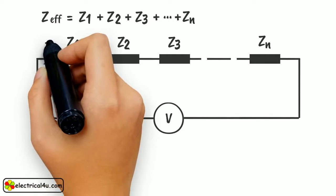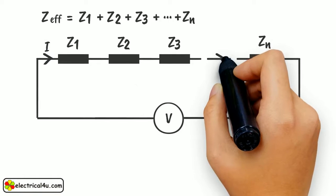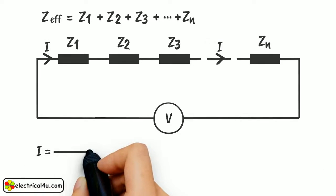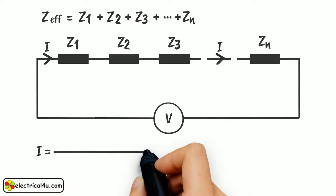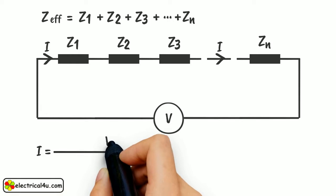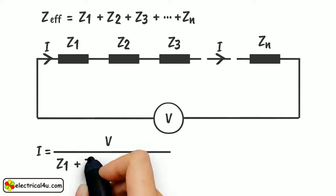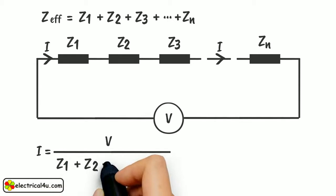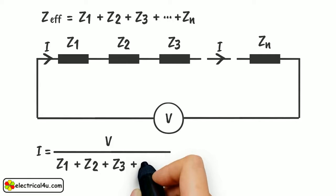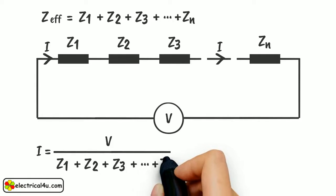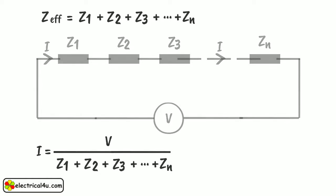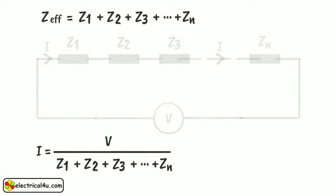Current passing through the circuit is given by I equals V divided by Z1 plus Z2 plus Z3 plus ... plus Zn. This current is passing through all the impedances connected in series.